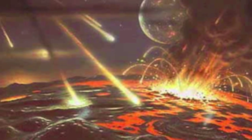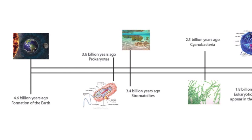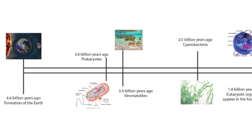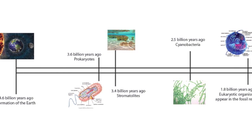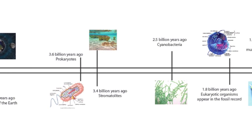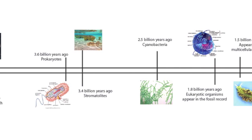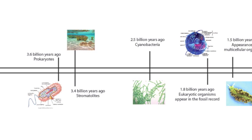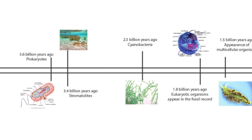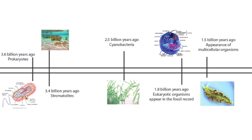4.6 billion years ago, the Earth was formed, and that's when it all began. 1 billion years later, life begins on Earth with the appearance of prokaryotes. 200 million years later, stromatolites first appear and have persisted since then, exhibiting one of the most endearing life forms on Earth. 900 million years later, cyanobacteria first appear, marking an important milestone in the Earth's environment, by providing oxygen that would later support complex life.